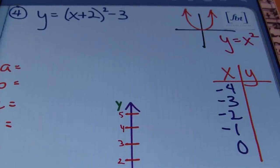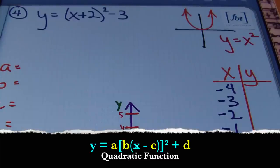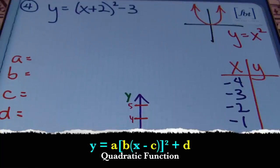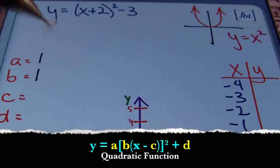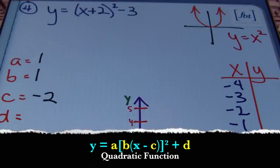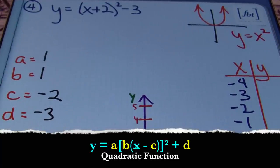In problem number four, we have y = (x + 2)² − 3. The parent function is y = x², a parabola. Looking at the A, B, C, D values: A = 1, B = 1, C = −2 (always change the sign of the value inside the parentheses), and D = −3. So we don't have a vertical or horizontal shrink or stretch. We do have a horizontal shift of negative 2 — two places to the left — and a vertical shift down three places.